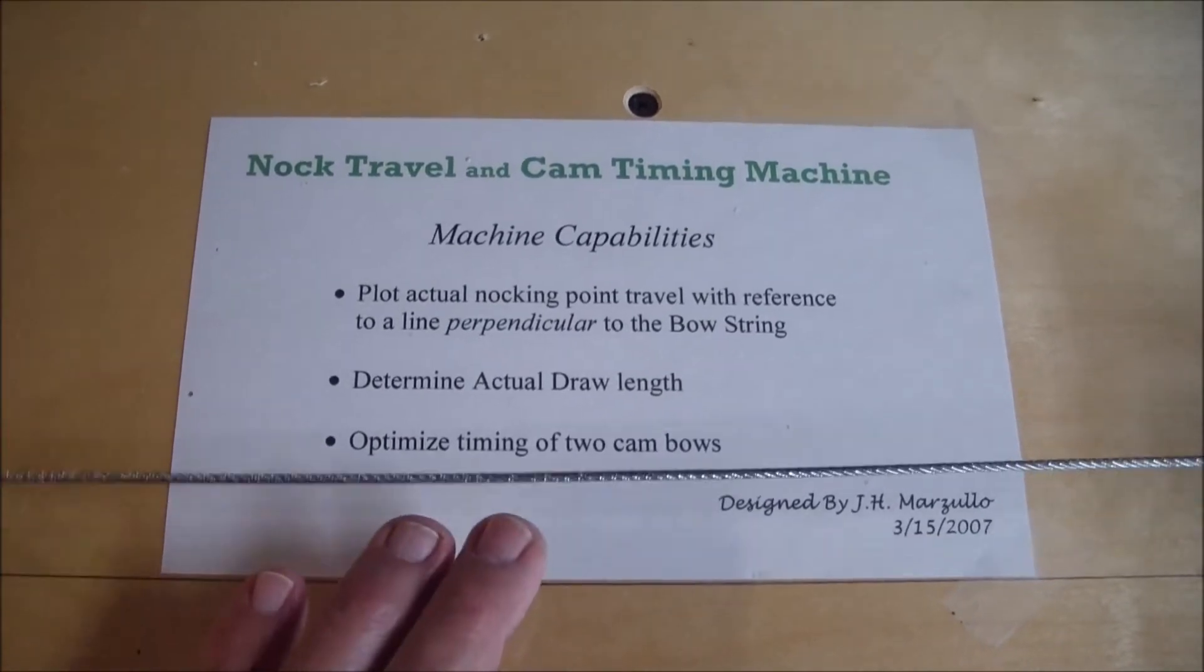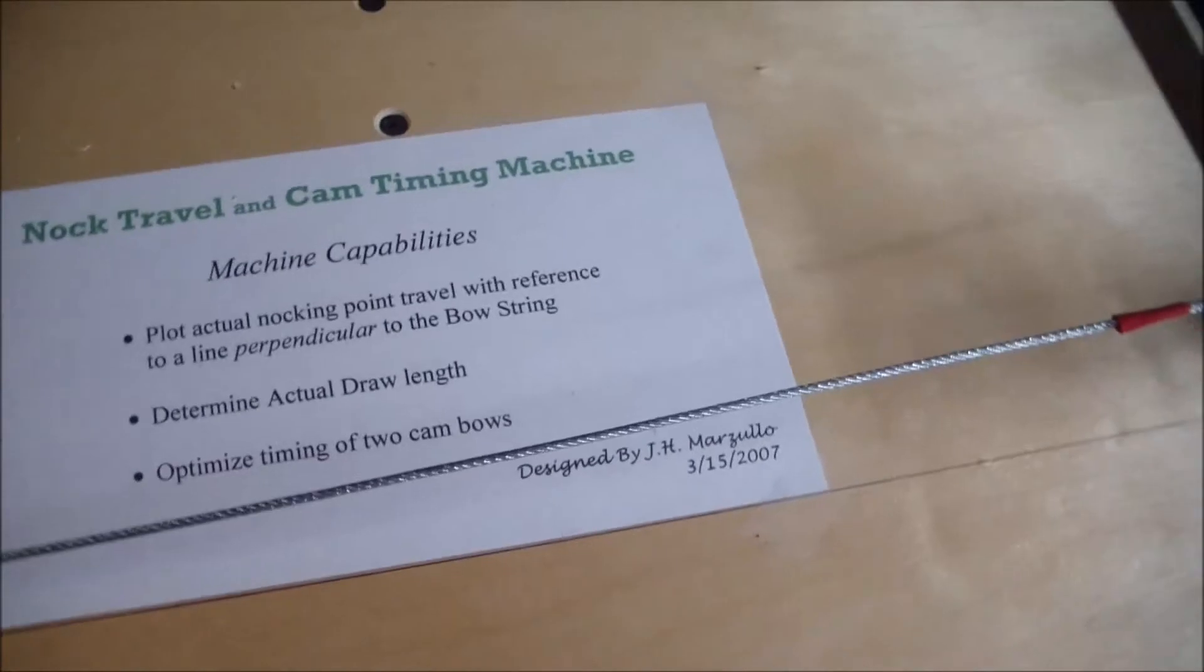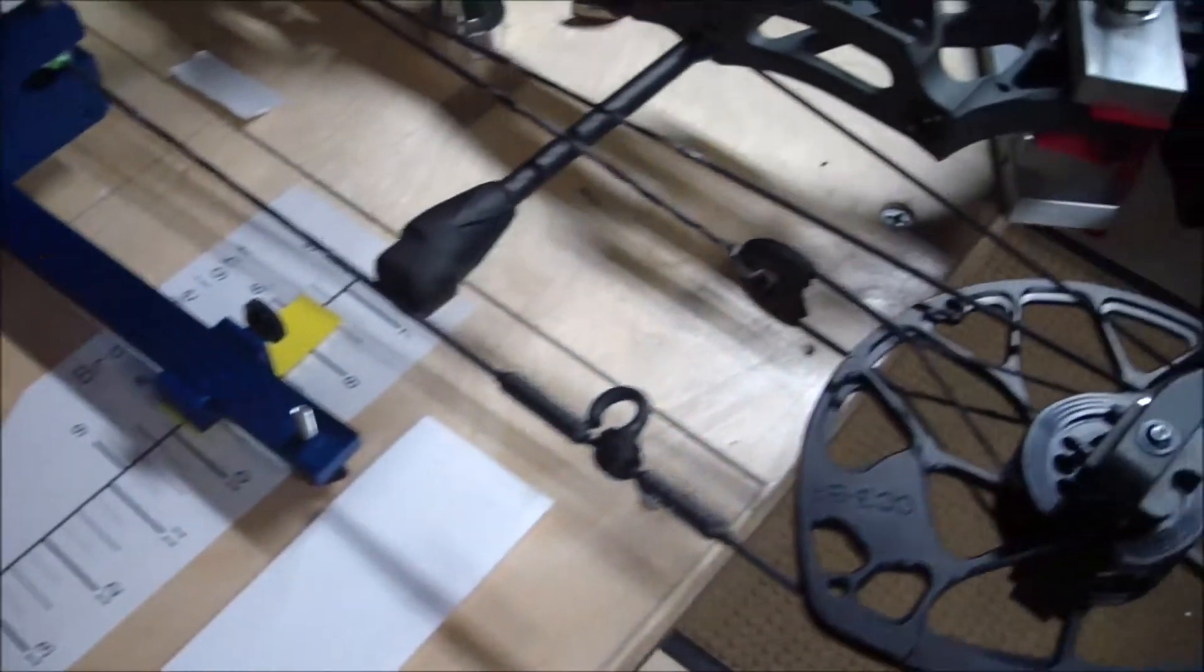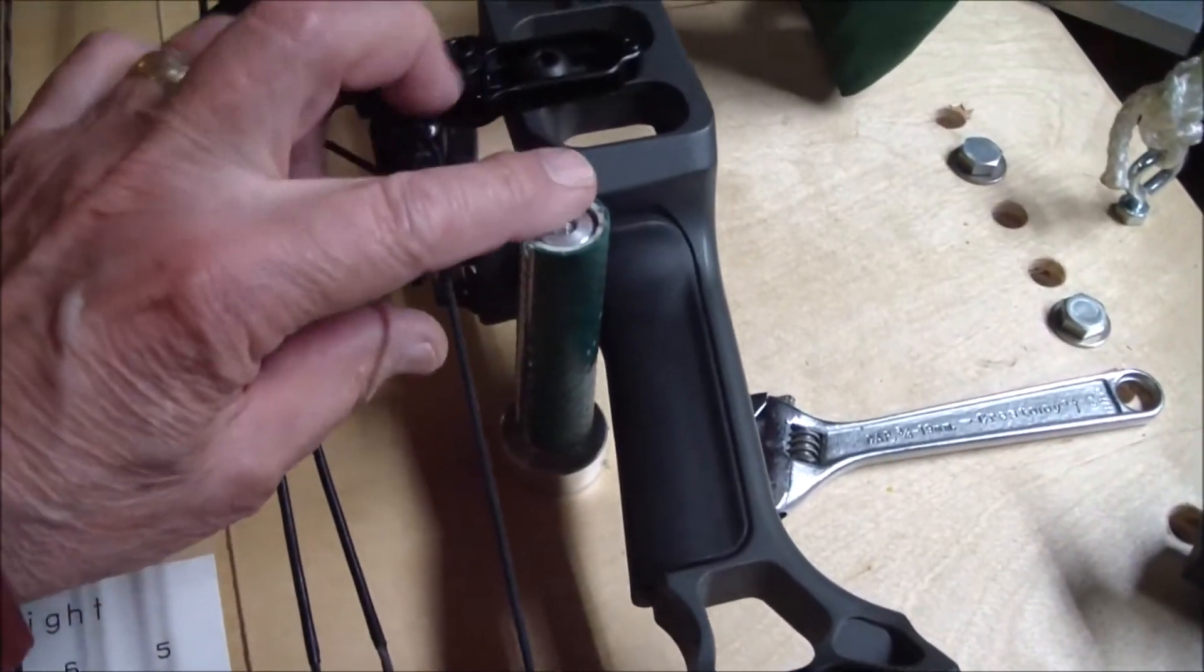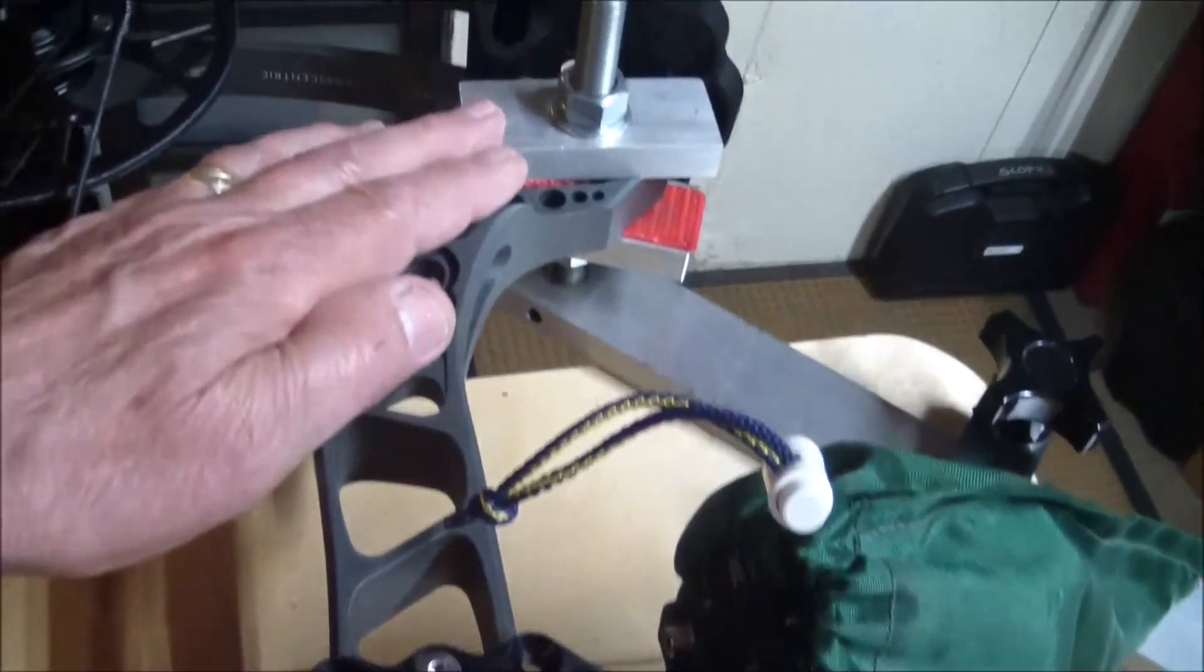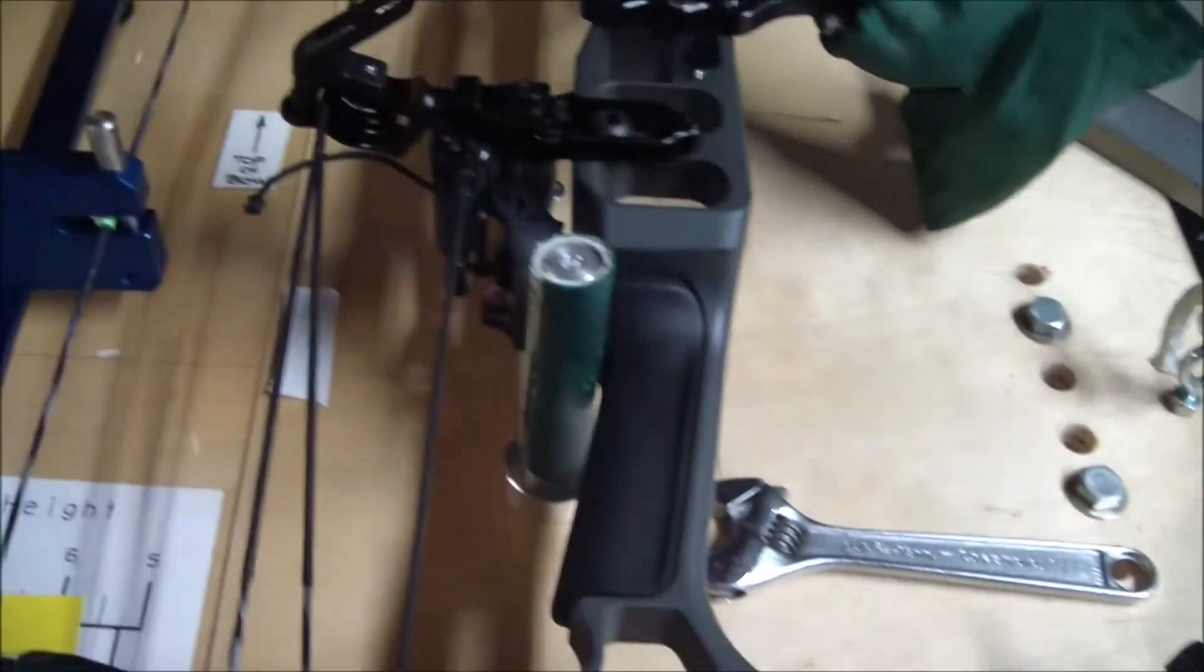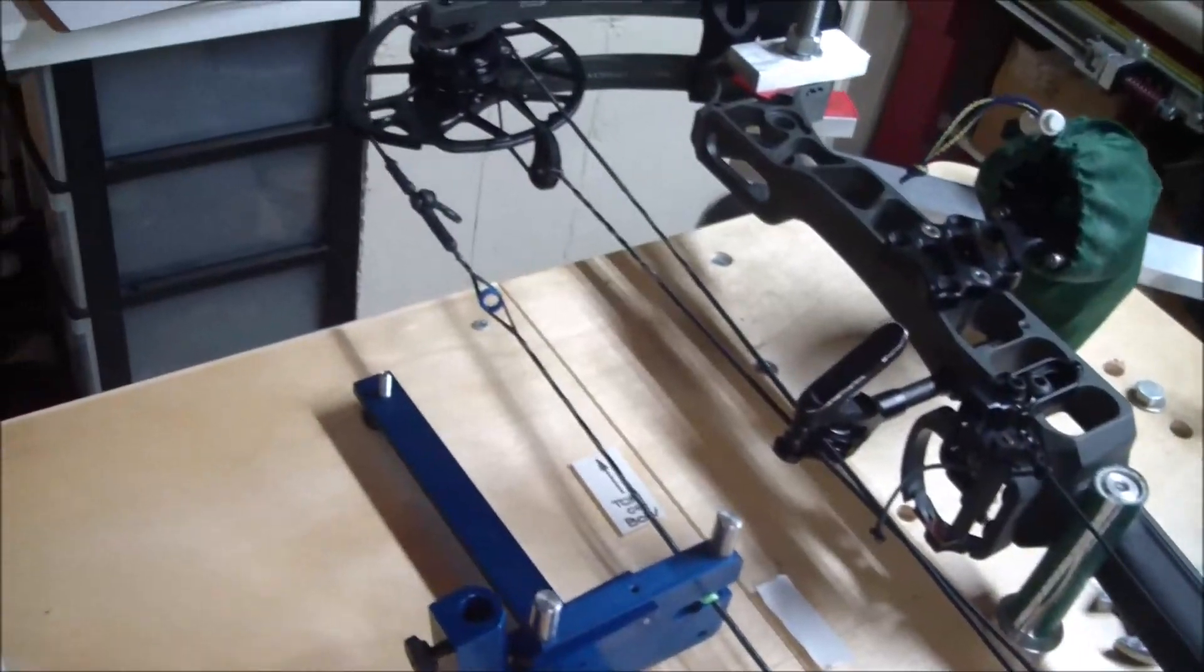Okay, here we are down at the piece of equipment I designed to test vertical knock travel. Here's how it works: the bow is located in the fixture against the point on the grip, the lowest point in the grip, and the frame is secured at two points here and there to prevent it from rocking and producing errors in our test results.